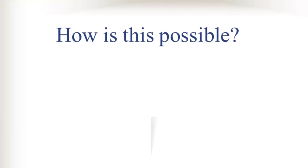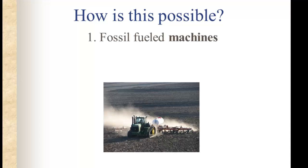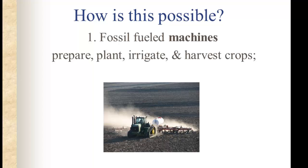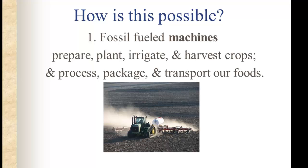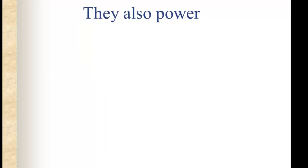So how is this massive increase in production possible? One obvious part is fossil-fuel-powered machines that prepare, plant, irrigate, and harvest the crops. We also use machines to process, package, and transport those foods, and we use energy to both cook and cool them. This energy revolution is key to the food revolution.